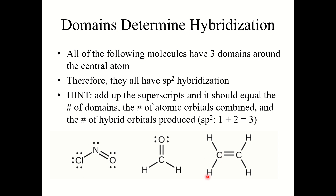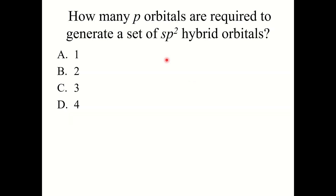Two carbons, each with three electron domains, are both sp² hybridized. Quick knowledge check: how many p orbitals are required to generate a set of sp² hybrid orbitals? The correct answer is 2 — as noted by that superscript exponent. Two p orbitals are required to generate a set of sp² hybrid orbitals.